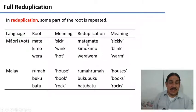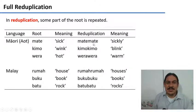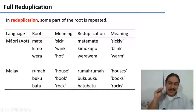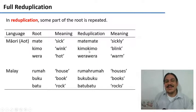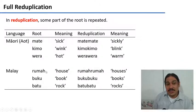And the reduplicated forms are 'mate-mate', 'kimo-kimo', 'wera-wera', which are an attenuation of the quality. 'Mate-mate' means only sickly, 'kimo-kimo' means just wink a little, and 'wera-wera' means just warm. In Malay, the plural is also formed by reduplication.